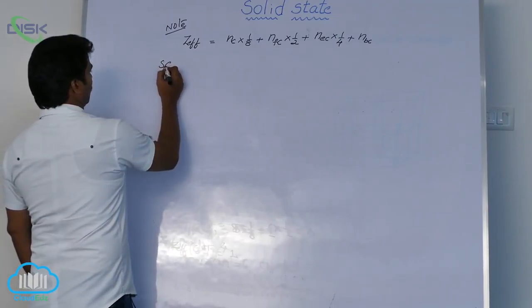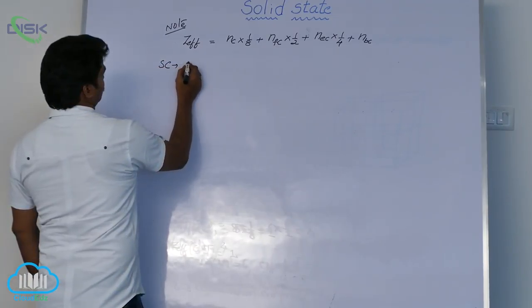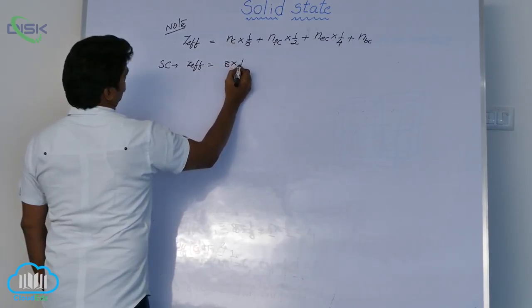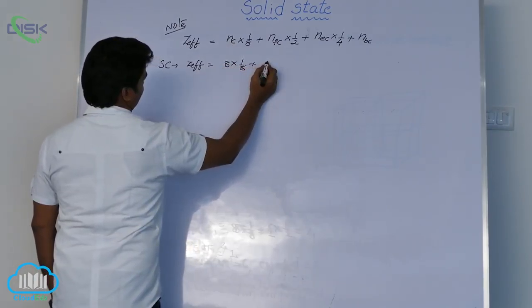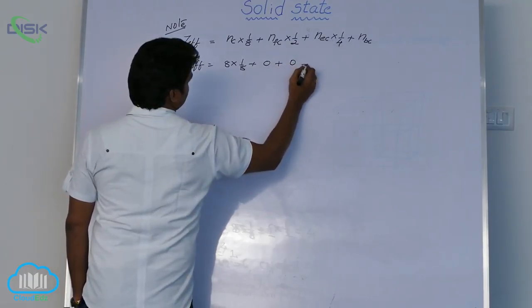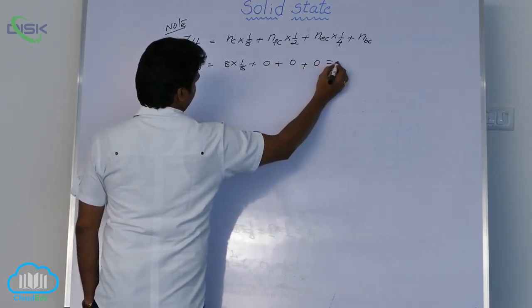For simple cube, how to calculate this? Z effective is corner atoms 8 into 1 by 8 plus face centered atoms 0, edge centered atoms 0, body centered atoms 0, that is why 1.